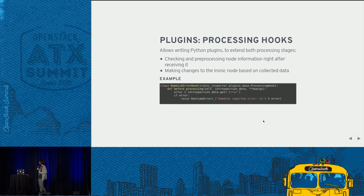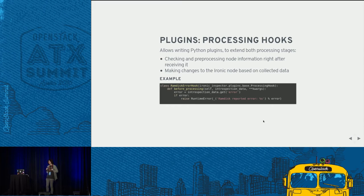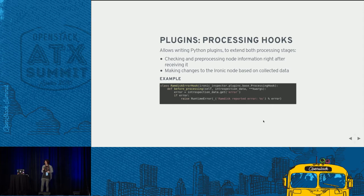Why two hook points? Between the two parts there is a tricky piece: we have to find the node in the Ironic database using the data received. Imagine many nodes sending big JSON objects — they don't contain the node UUID. So there is a lookup process which takes MAC addresses and IPMI addresses discovered from within the machine and tries to match them. The first hook runs before that lookup, the second runs after. The first hook cannot update the Ironic node because we don't know the node yet, but it can do validation and help the lookup process.